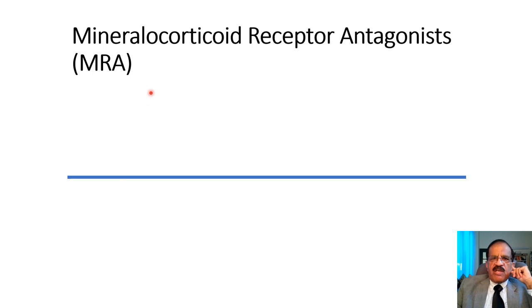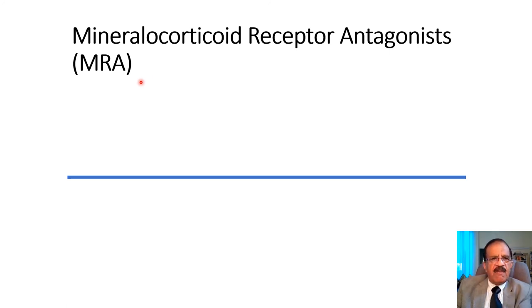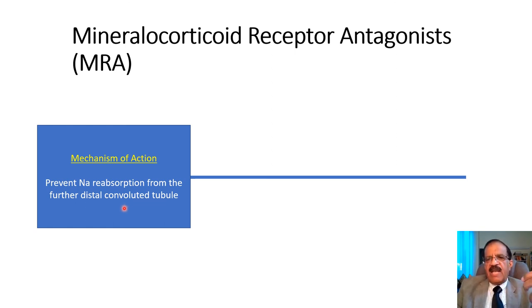Then we have mineralocorticoid receptor antagonists. These are not first-line drugs; they are usually used in stage 3 or stage 4 hypertension when patients are refractory to other drugs — in fact only when somebody is refractory to a three-drug combination. I mention them here before RAS blockers because they also work through the kidneys. They prevent sodium reabsorption from the distal convoluted tubules, but from a site even further distal than where thiazides work, so the effect is even milder. As you go distally, less and less sodium is passing through the nephron.